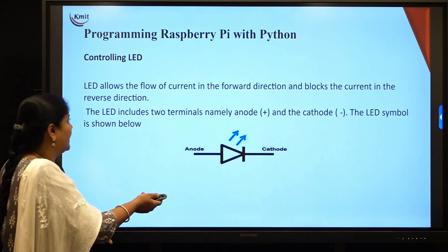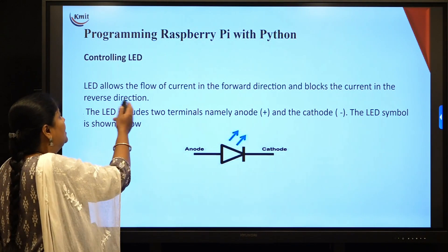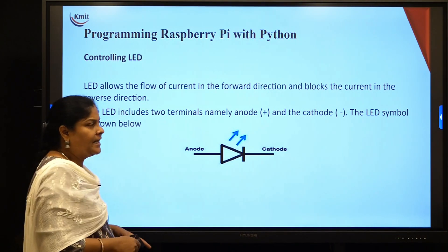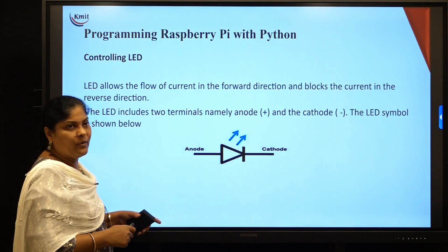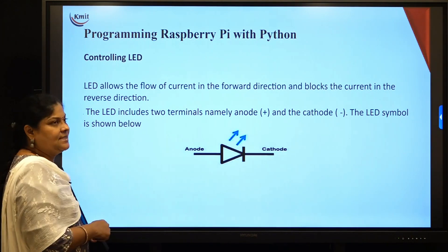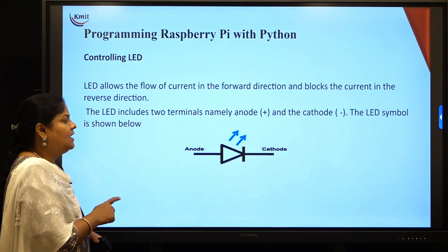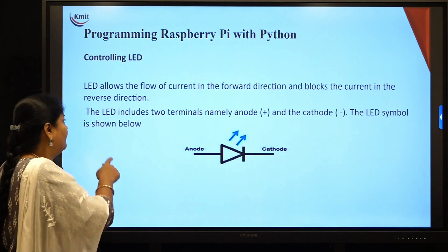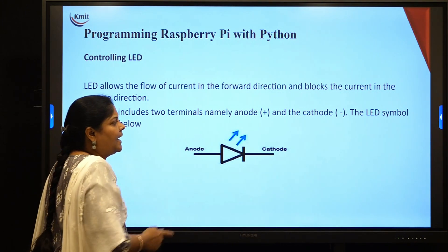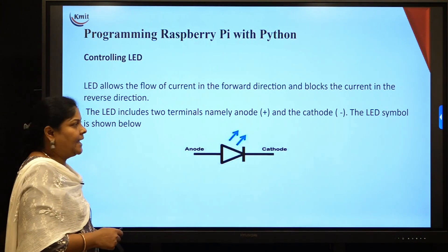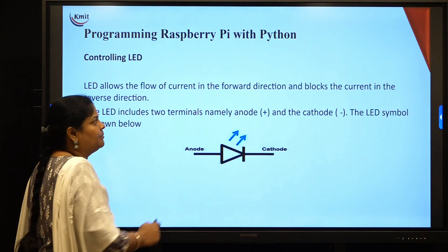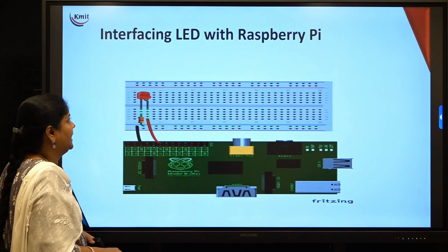As a brief theory review: an LED allows current to flow in the forward direction and blocks it in the reverse direction. An LED has two terminals — anode and cathode. The symbol of the LED represents this diode structure.